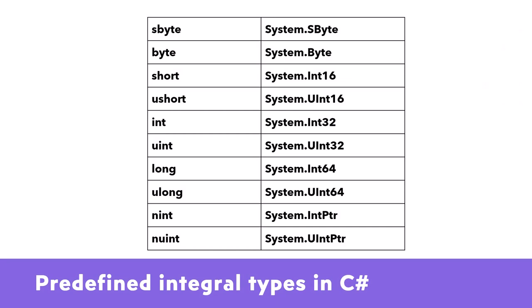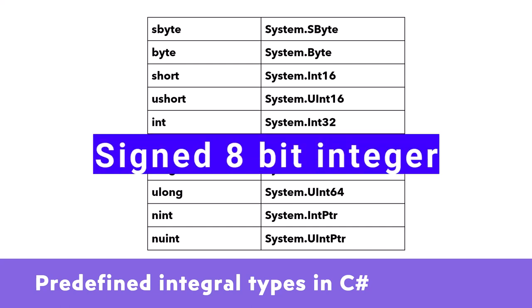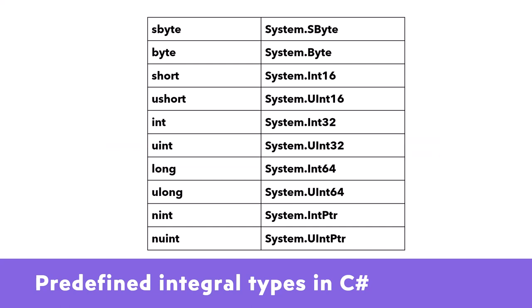Here is a list of all the predefined integral types in C#. First is sbyte — a signed 8-bit integer. Then we have byte — an unsigned 8-bit integer. Then short — a signed 16-bit integer. Then ushort — an unsigned 16-bit integer. So the first two are 8-bit, then 16-bit, then 32-bit, then 64-bit. At the end we have nint (signed integer) and nuint (unsigned integer), which are new in C# 9.